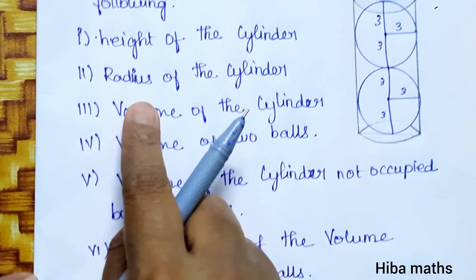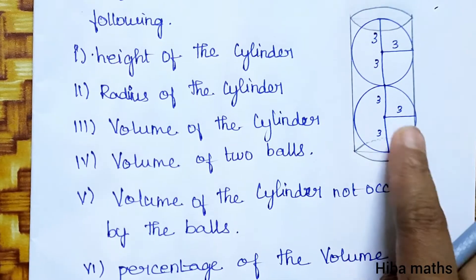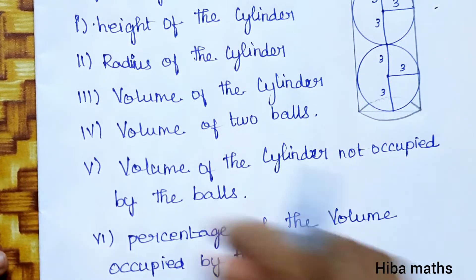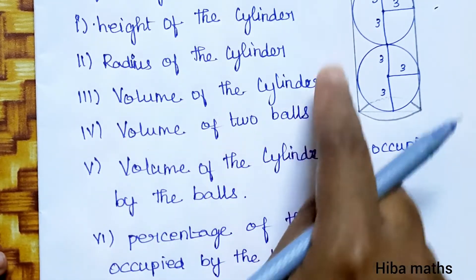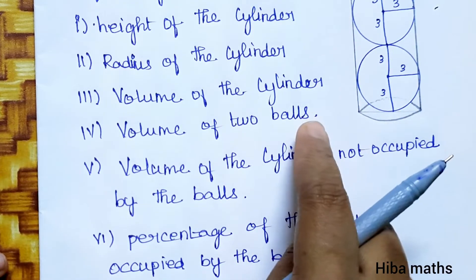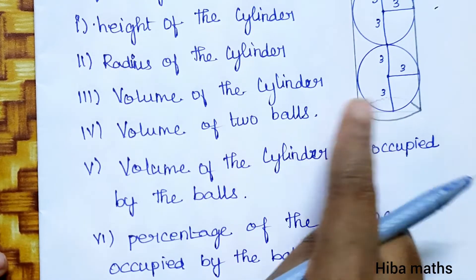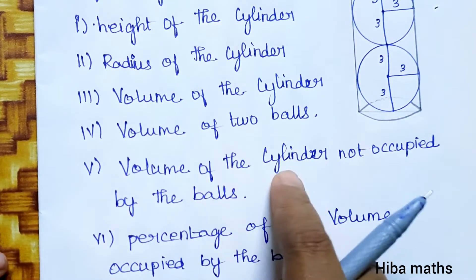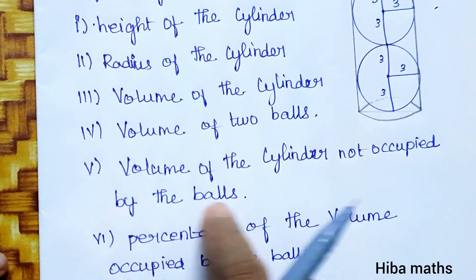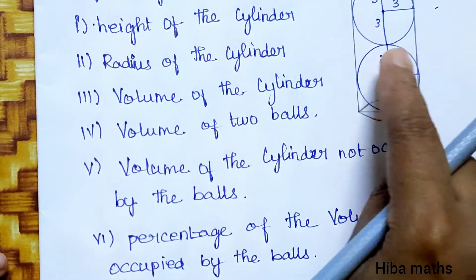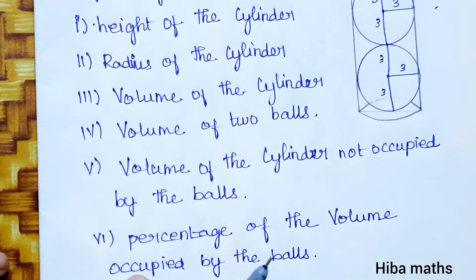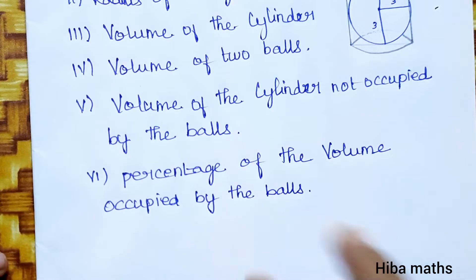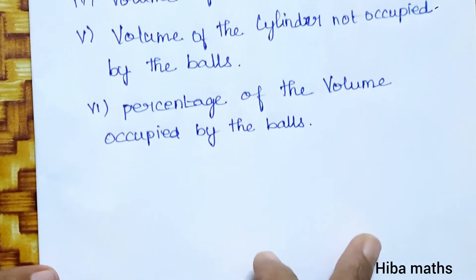Next is the radius of the cylinder. The radius of the ball equals the radius of the cylinder. Then volume of cylinder — once we know height and radius, we can find volume. Volume of 2 balls — knowing the radius and formula, we can find volume of 2 balls. Then volume of cylinder not occupied by balls: cylinder volume minus ball volume gives the answer. Finally, percentage of volume occupied by balls.